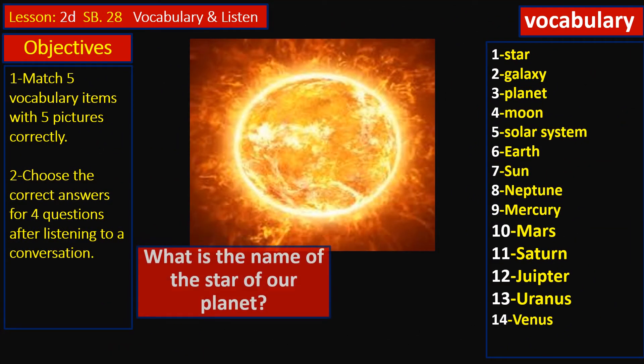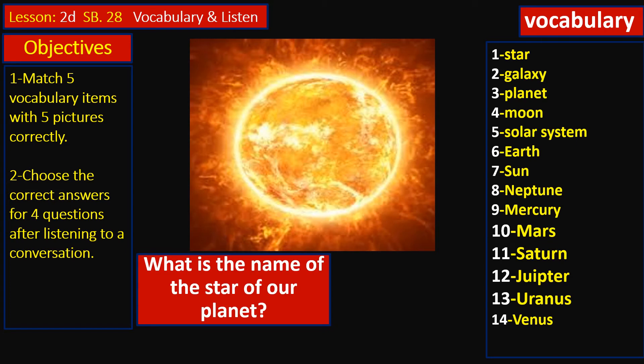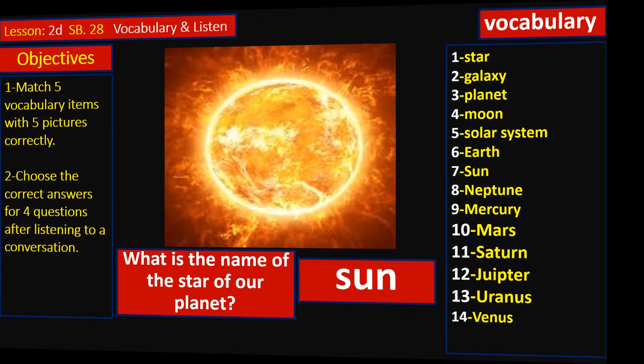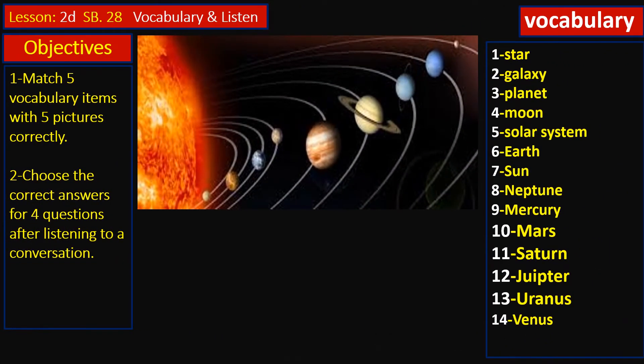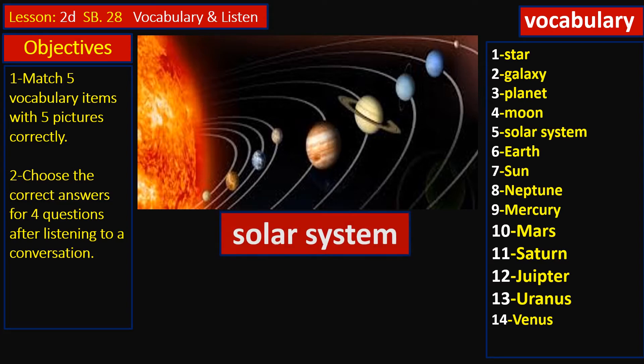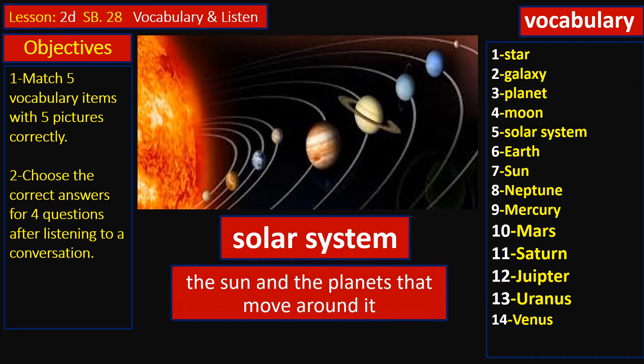What's this? What is the name of the star of our planet? What do you think? For sure, sun. That's right. Have a look at this one. What is the suitable vocabulary for this one? Solar system. Very good. The sun and the planets that move around it. That's right.